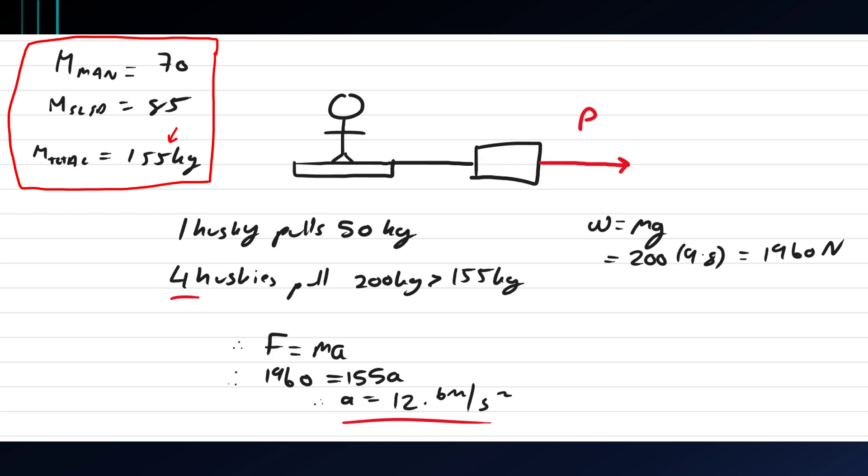I'm not a very good drawer so I wouldn't want to draw a husky here, but if one husky can pull 50 kilograms then the minimum to go over 155 kilograms is four because with three huskies they can only carry 150 kilograms which is less than 155.